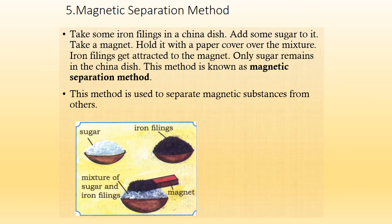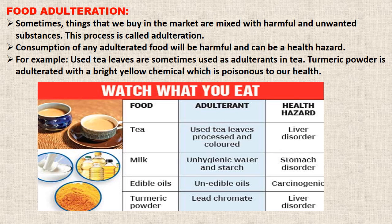Magnetic separation: take some iron filings in a china dish and add some sugar to it. Hold a magnet covered with paper over the mixture — the iron filings get attracted to the magnet and only sugar remains in the china dish. This method is used to separate magnetic substances from non-magnetic substances. Food adulteration: sometimes things we buy in the market are mixed with harmful and unwanted substances. For example, used tea leaves are sometimes used as adulterants in tea. Watch what you eat — stay safe, stay healthy.